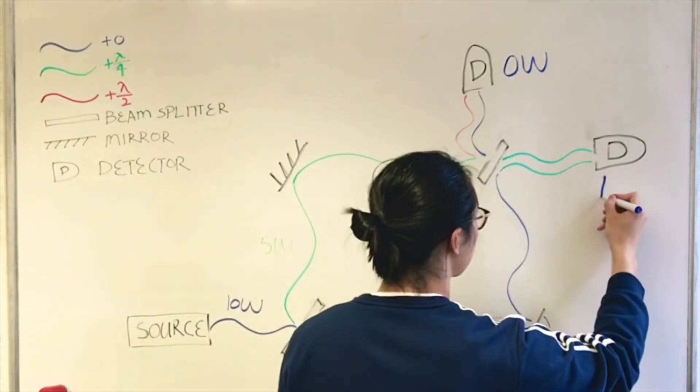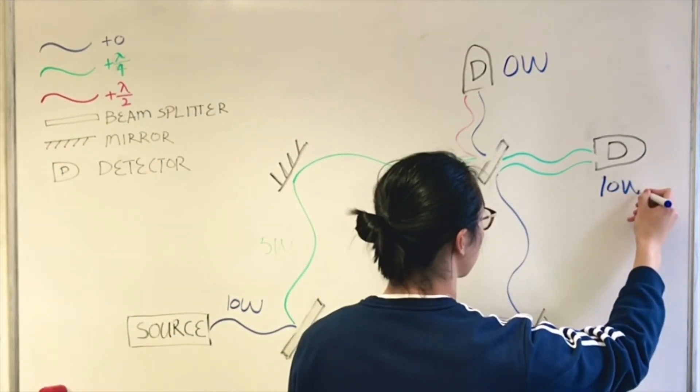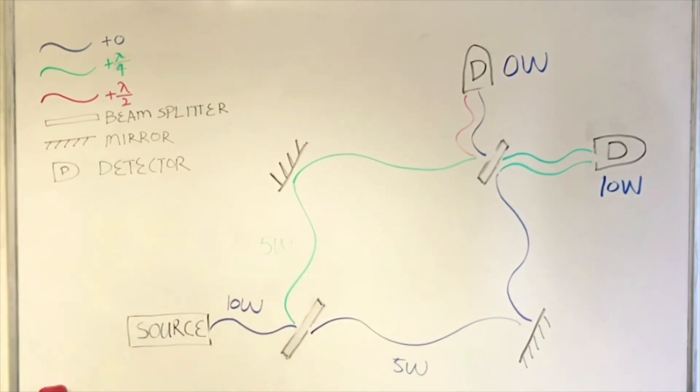As we can see, the two waves arriving at the second detector will both be green. Two waves that are in phase will interfere constructively. And since each wave is 5 watts, the second detector will detect a 10 watt wave.